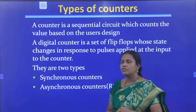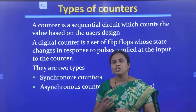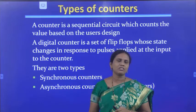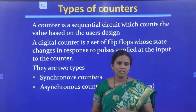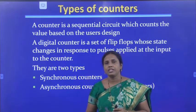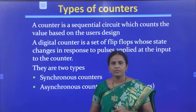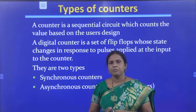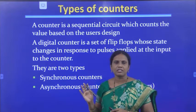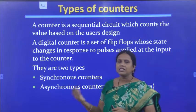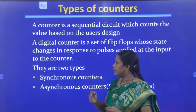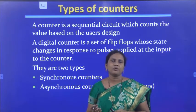A counter is nothing but a sequential circuit which counts the values based on the user's design. A digital counter is nothing but a set of flip-flops. We have to use toggle flip-flops — that is JK as well as T flip-flops — for construction of counters. They are having two types: one is synchronous counter and the other one is asynchronous counter.